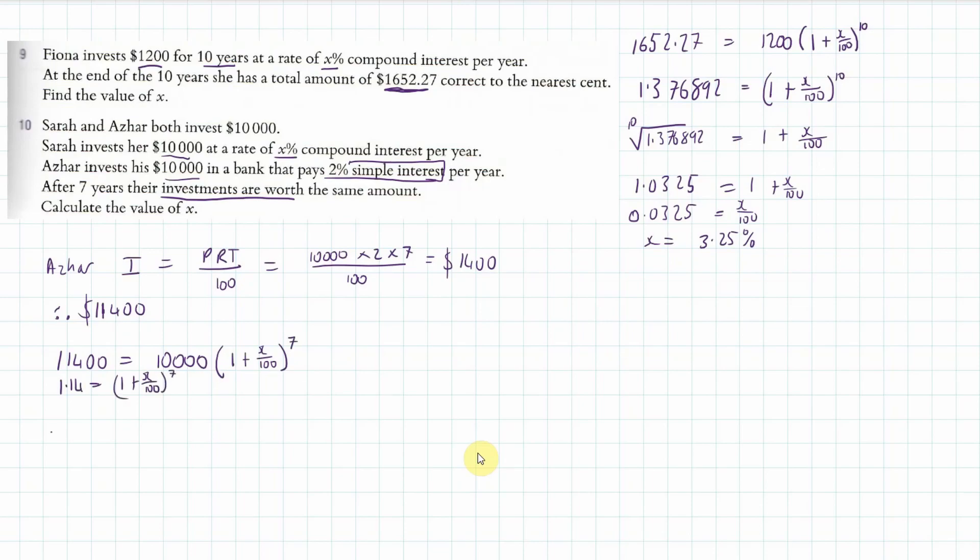1.14 is equal to 1 plus X over 100 all to the power of seven. I'm going to seventh root both sides, and that will give me 1 plus X over 100 on the right hand side. Now the seventh root of 1.14 is 1.0189 rounded there, is equal to 1 plus X over 100. And so that means that 0.0189 is equal to X over 100, and therefore X is equal to 1.89%. And that should be our answer there.